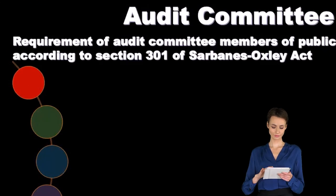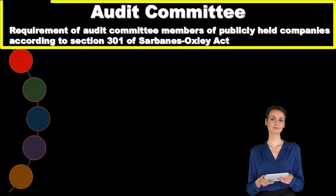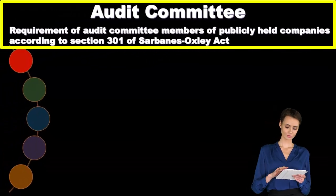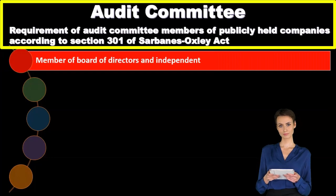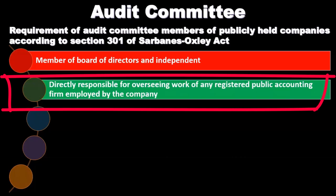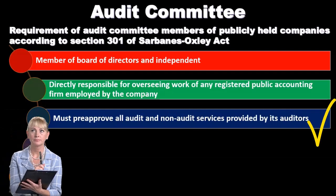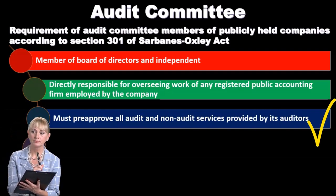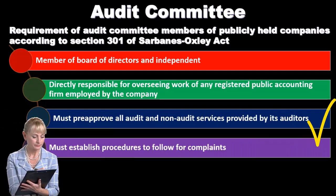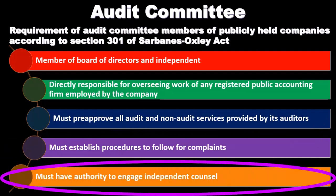Regarding the audit committee: requirements for members of publicly held companies, according to Section 301 of the Sarbanes-Oxley Act, include being a member of the board of directors and being independent, directly responsible for overseeing the work of any registered public accounting firm employed by the company. They must pre-approve all audit and non-audit services, must establish procedures for complaints, and must have authority to engage independent counsel.